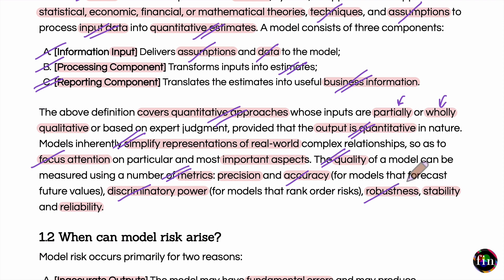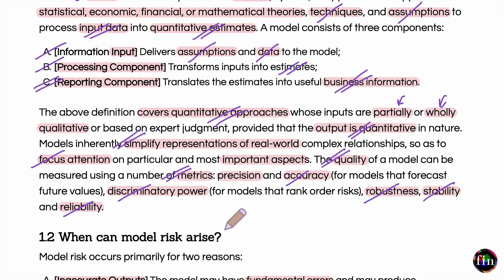Other metrics include robustness, which essentially tells us how much you can stretch any given model before it eventually breaks. Then, if you bring in the connotation of time, you can define a metric called stability — how stable is any given model over time when markets change and the behavior of various investors and market participants changes. And lastly, you can think of reliability — if you were to use any given model repeatedly many times with very similar inputs, how divergent are the model's outputs?